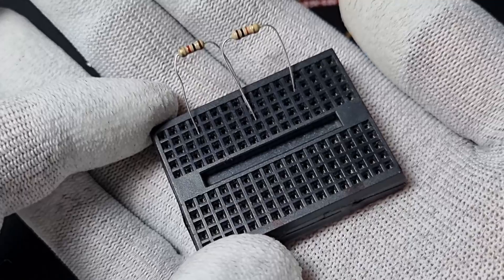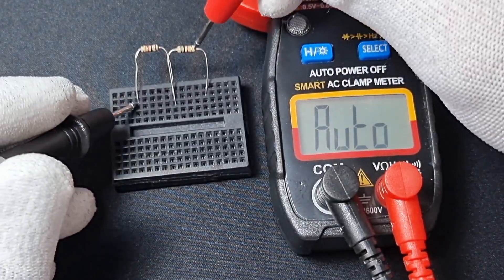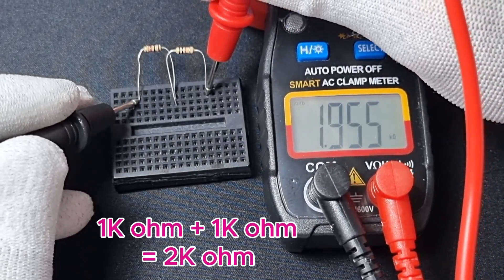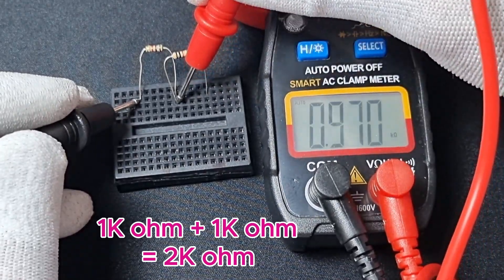Now let's discuss connecting resistors in series. Doing this increases the total resistance without affecting the power rating. For example, if we connect two 1 kilo ohm resistors in series, we'll get a 2 kilo ohm resistor with a power rating of 0.25 watts. It's pretty simple to understand, right?